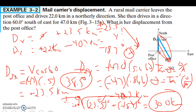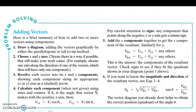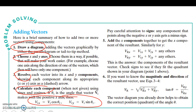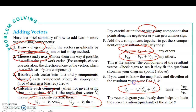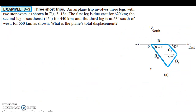The steps to solve any vector problem: draw a diagram, choose your axes, resolve each vector into x and y components, calculate each component using your equations, pay attention to signs, add all components together, then use the Pythagorean theorem, and finally use tangent to find the angle. Here's another example with three legs of a trip. For d1 going east, our x is 620 kilometers and y is zero.